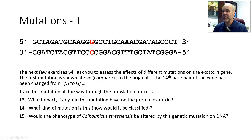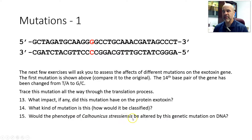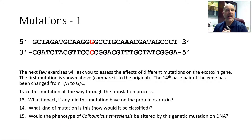You're going to have to trace these mutations through the whole process you did at the beginning of the case. Then it's going to ask you what kind of mutation it is and how it would be classified — that was covered in a Chapter 8 video and is also in your textbook in the mutations section. The third question for each mutation asks whether the phenotype of Calhounicus stressiensis would be altered, so you have to think about whether the molecules directly responsible for traits have changed.